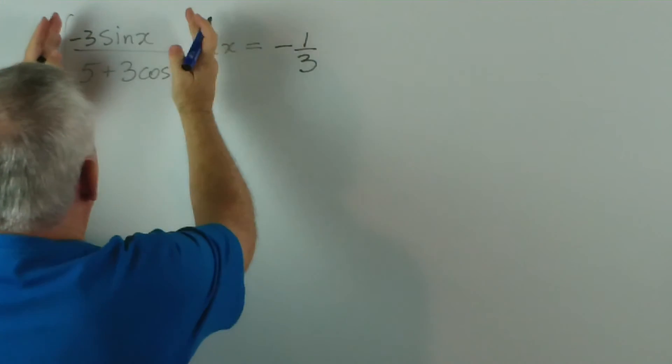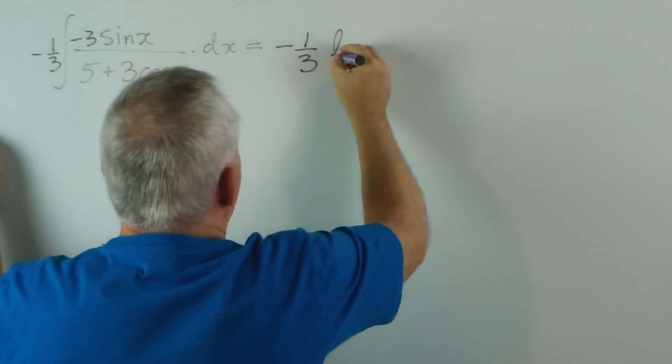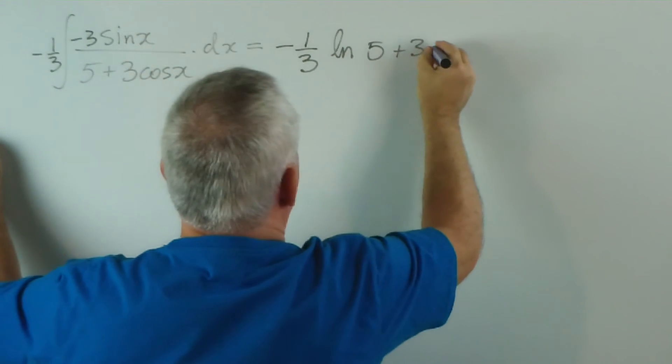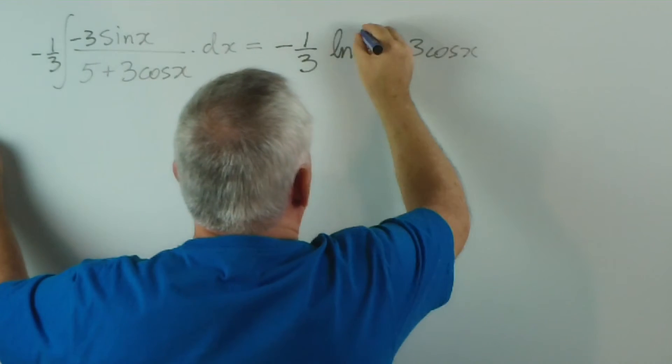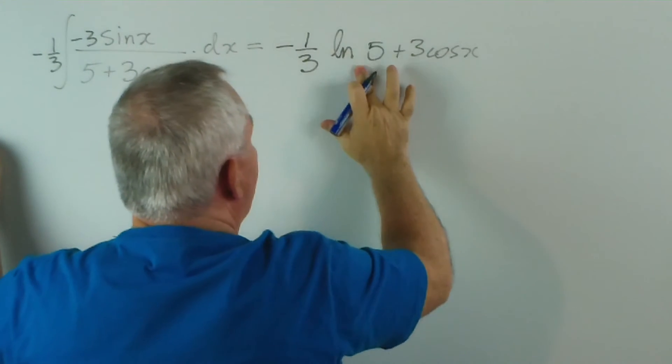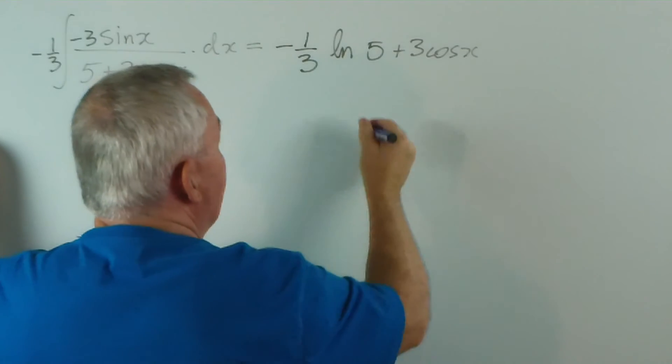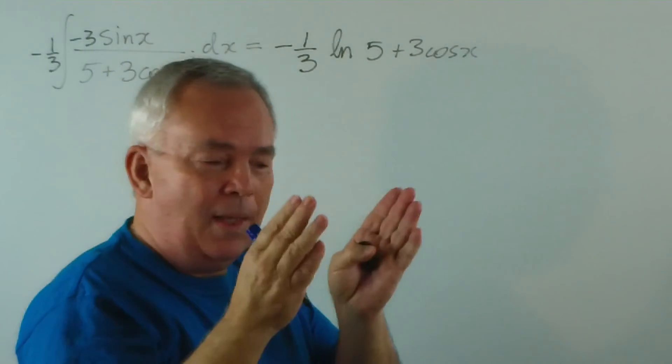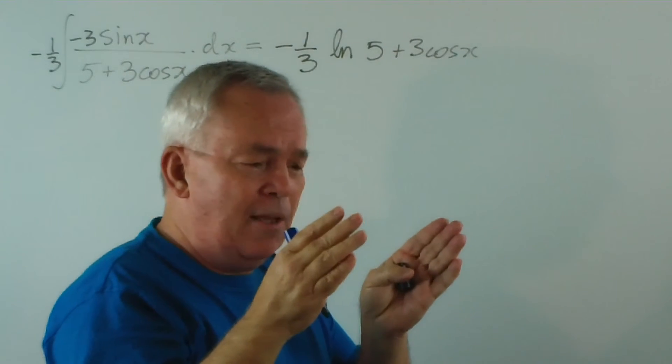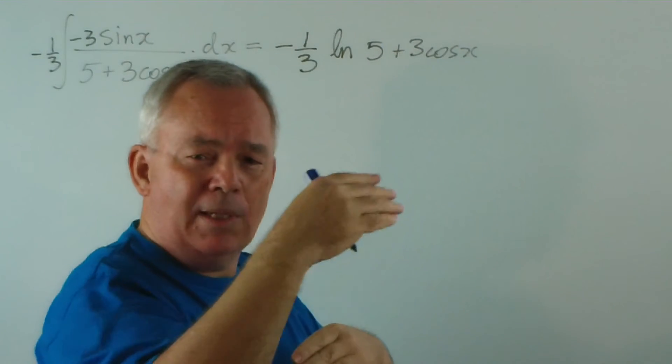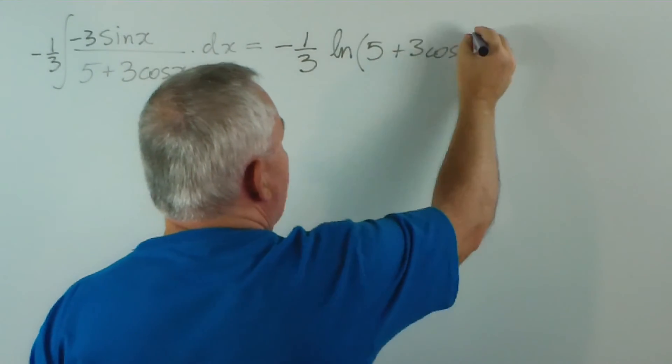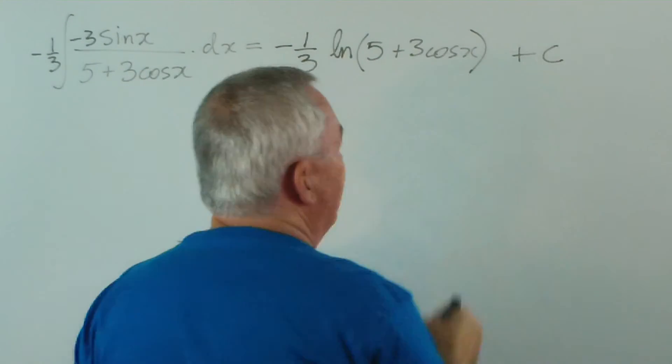Negative 1 third. And this integral is the natural logarithm of 5 plus 3 cos x. Well, actually, I don't even need absolute value signs because the cosine of x will only have values in the range negative 1 to positive 1. This expression can never be negative. So there we go. That's the solution.